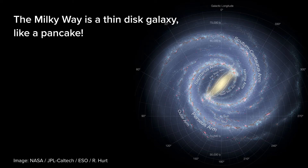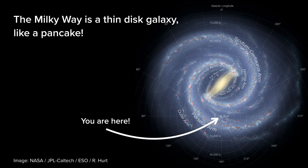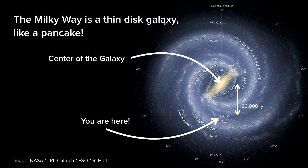We all live in a thin, spiral disk galaxy called the Milky Way. It's a really flat, thin disk, sort of like a pancake. We all live here on the planet Earth, which is a planet in the solar system next to the Sun. It's pretty far away from the center of the galaxy — about 26,000 light years between us and the center. You can find out even more about our home galaxy in the video titled 'What is the Milky Way' on our group channel.